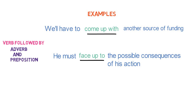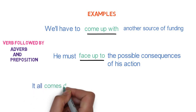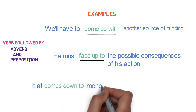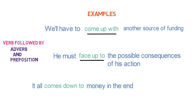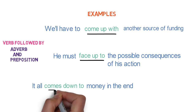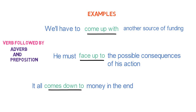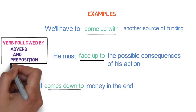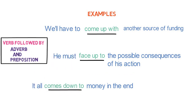Let's look into the last example of a phrasal verb containing adverb and preposition. 'It all comes down to money in the end.' Here, 'comes down to' is a phrasal verb having the combination of verb, adverb, and preposition. All these are examples of phrasal verbs having adverb and preposition.